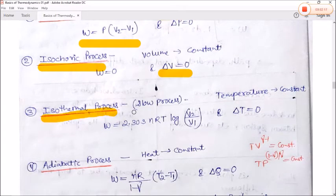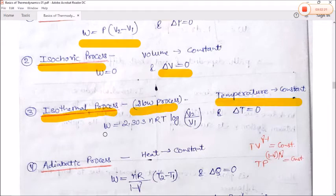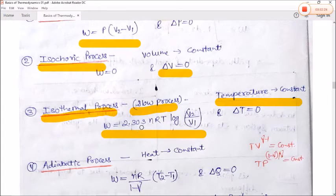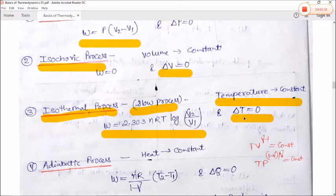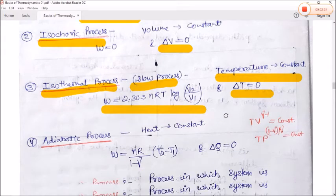Number 3 is the isothermal process — it is a very slow process where temperature is constant. Work done is W = 2.303 nRT log(V2/V1). Since temperature is constant, ΔT = 0.